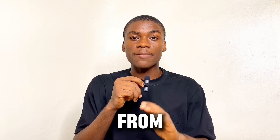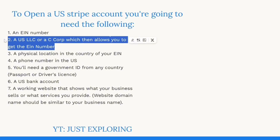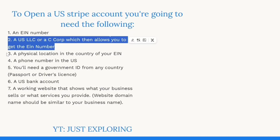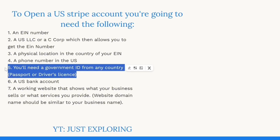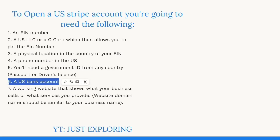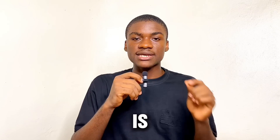To open a US Stripe account, you're going to need the following: an EIN number, a US LLC or C-Corp (which allows you to get the EIN number), a fiscal location in the country of your EIN, a US phone number, a government ID from any country (passport or driver's license), a US bank account, and a working website that shows what your business sells or what services you provide. The website domain name should be similar to your business name.